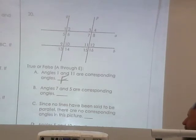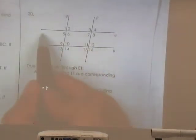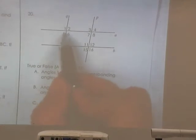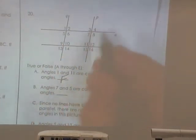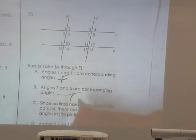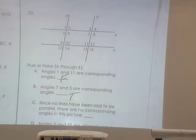How about number 7 and 5? 7 and 5. Are they corresponding? Yes. They will be, right? There's your transversal. It connects the two groups together. 5 is the bottom left of that group. 7 is the bottom left of that group. So they are corresponding angles. It says no lines have been said to be parallel. There are no corresponding angles in this picture. It's 50-50 people. False. That is correct. There are corresponding angles.